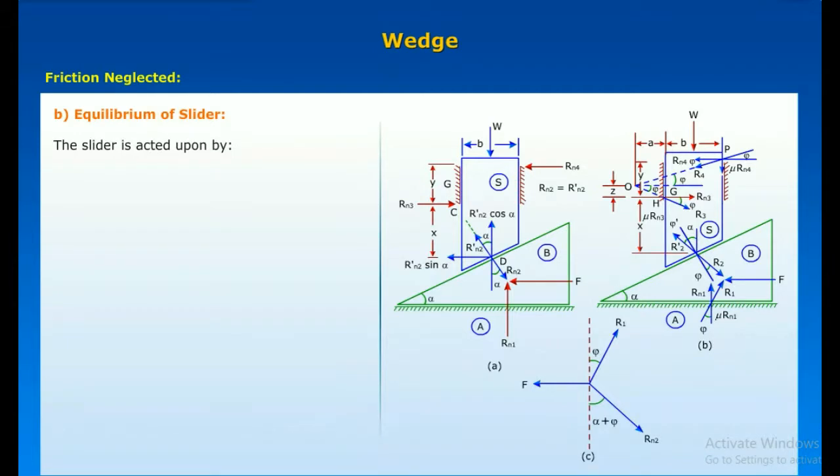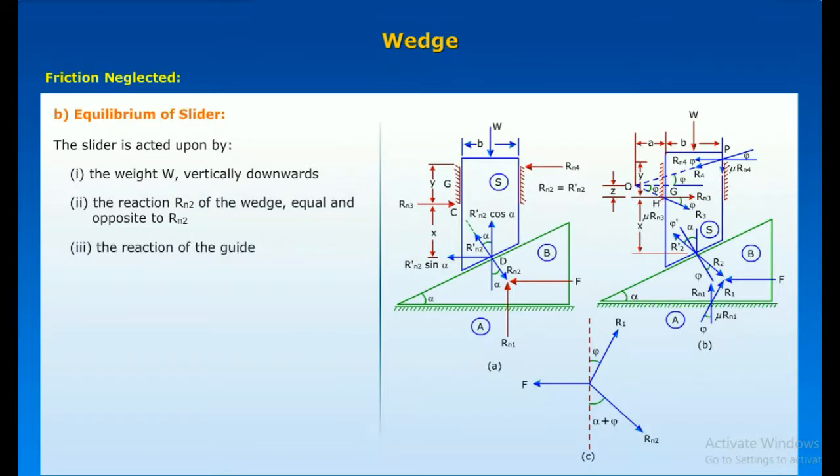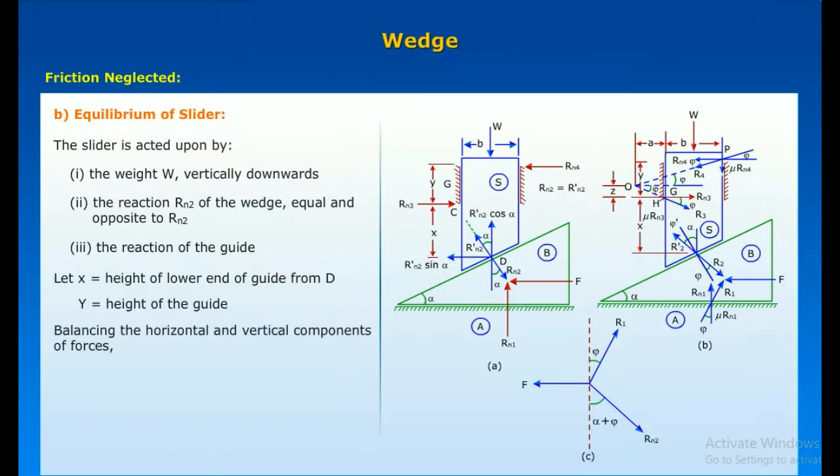When we discuss equilibrium of slider, the slider is acted upon by the weight W vertically downwards, the reaction Rn2 of the wedge equal and opposite to Rn2, and the reaction of the wedge. Let X is equal to height of lower end of guide from D, Y is equal to height of the guide. Balancing the horizontal and vertical components of forces.